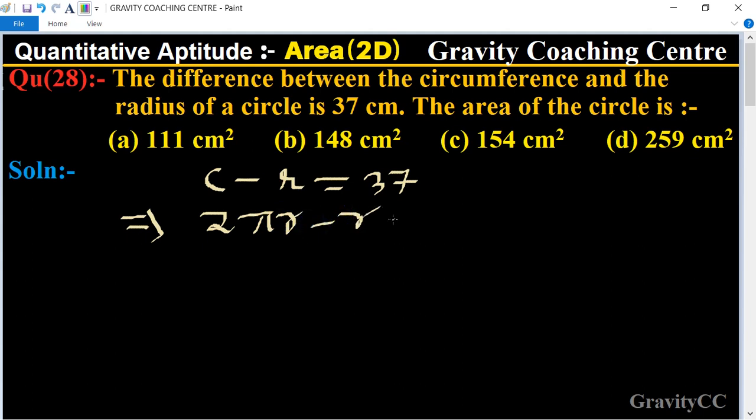This implies that taking r as a common factor, r(2π - 1) = 37.